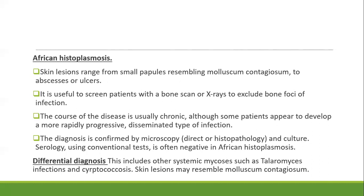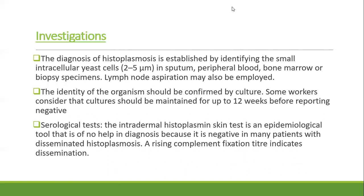Diagnosis of African histoplasmosis is confirmed by microscopy (direct or histopathology) and culture. Serology using conventional tests is often negative in African histoplasmosis. Differential diagnosis includes systemic mycoses such as Talaromyces and Cryptococcus, and the skin lesions resemble molluscum contagiosum.